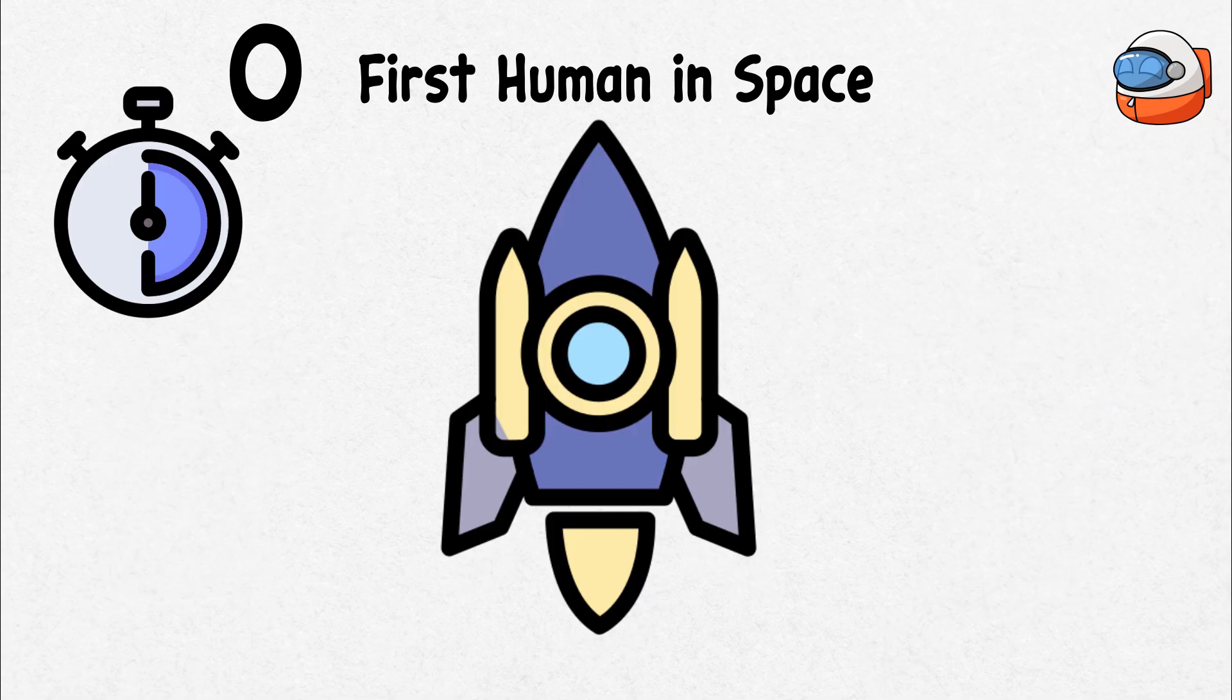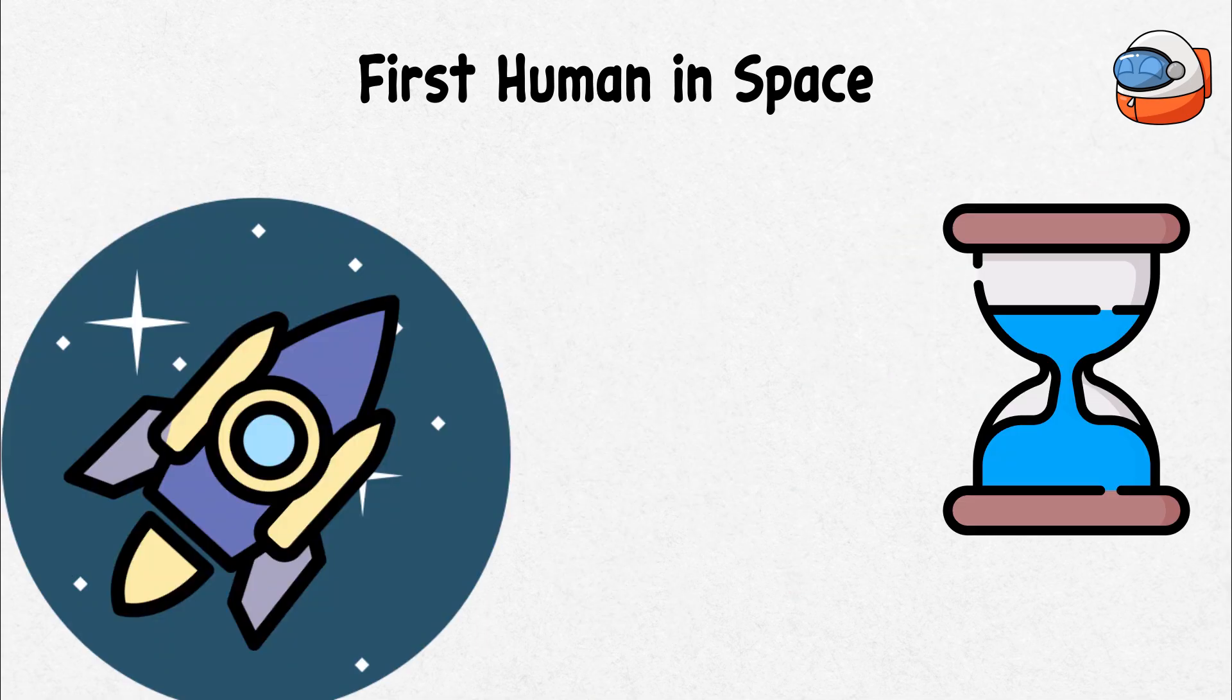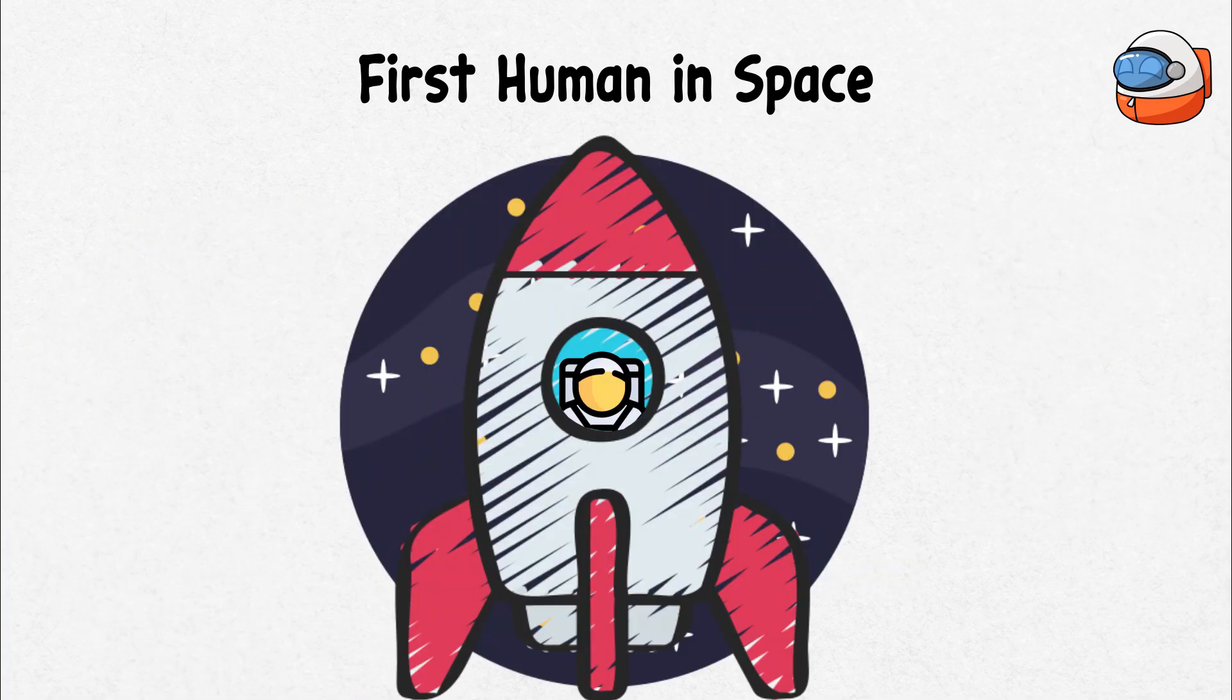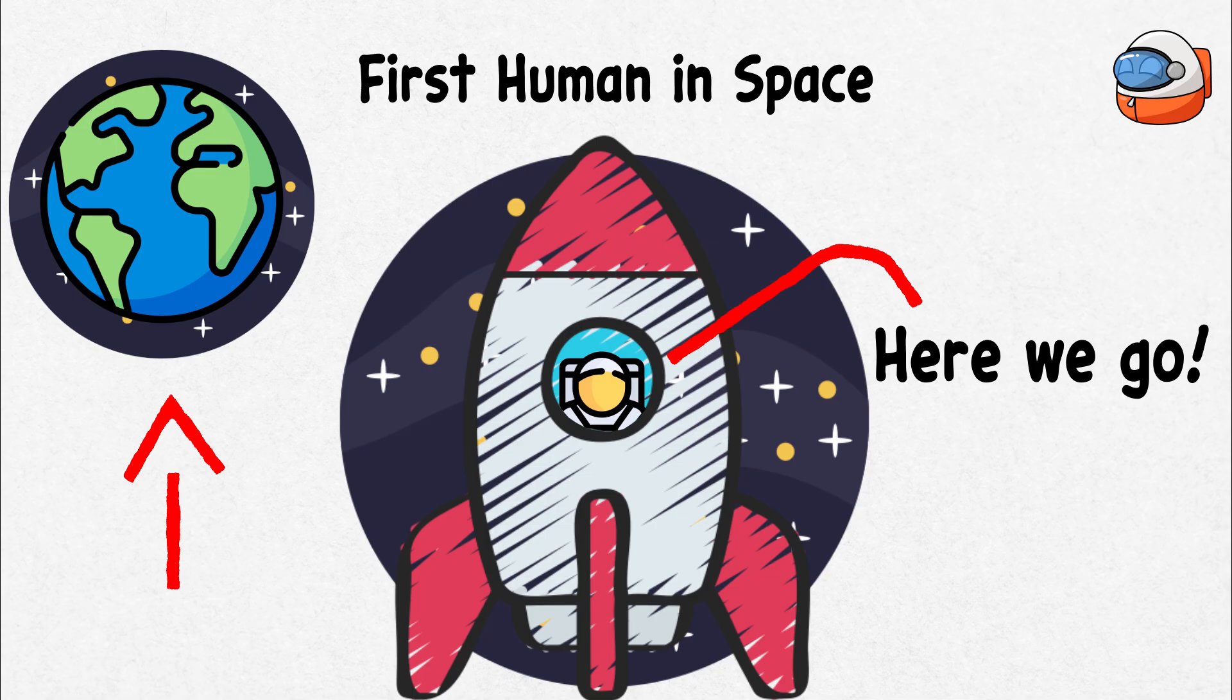As the countdown reached zero, Vostok 1 roared to life, firing off with a very loud noise. Within minutes, Gagarin was racing through space, experiencing weightlessness for the first time. He gazed out of his window and saw the Earth from above. Here we go! Gagarin famously exclaimed as he embarked on his historic adventure.